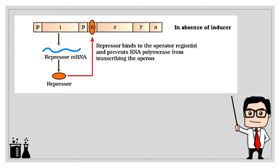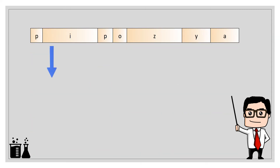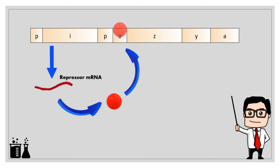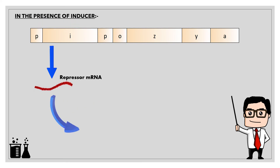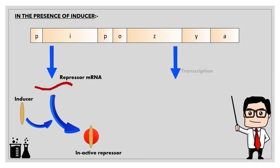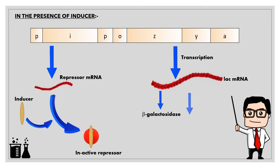In the absence of inducer, the I gene codes for repressor mRNA which binds with the operator region and blocks the transcription process. But in the presence of inducer, the repressor binds with the inducer, gets inactivated, and therefore the transcription process proceeds. The Z gene, Y gene, and A gene code for beta-galactosidase, permease, and transacetylase respectively, via lac mRNA.